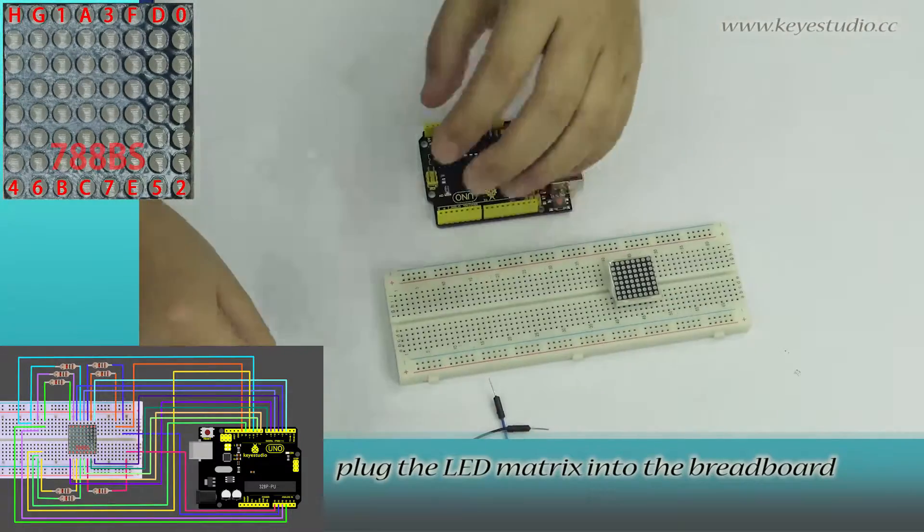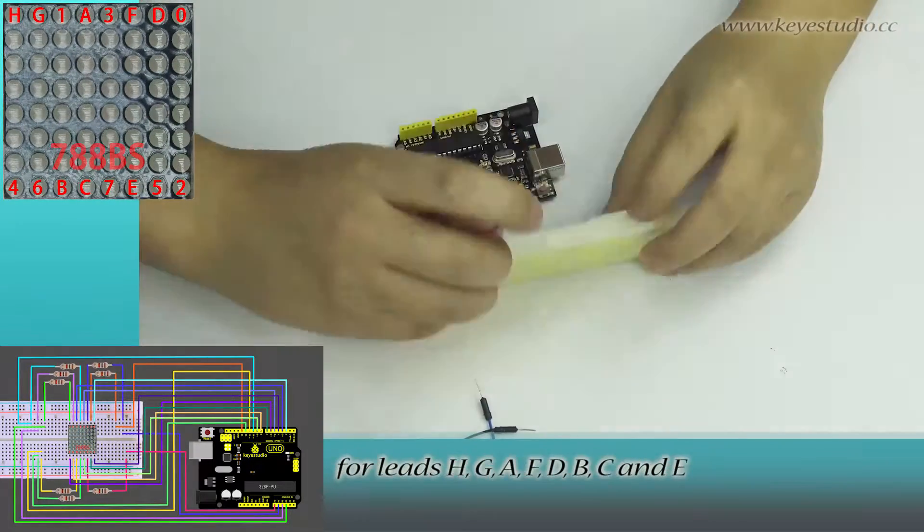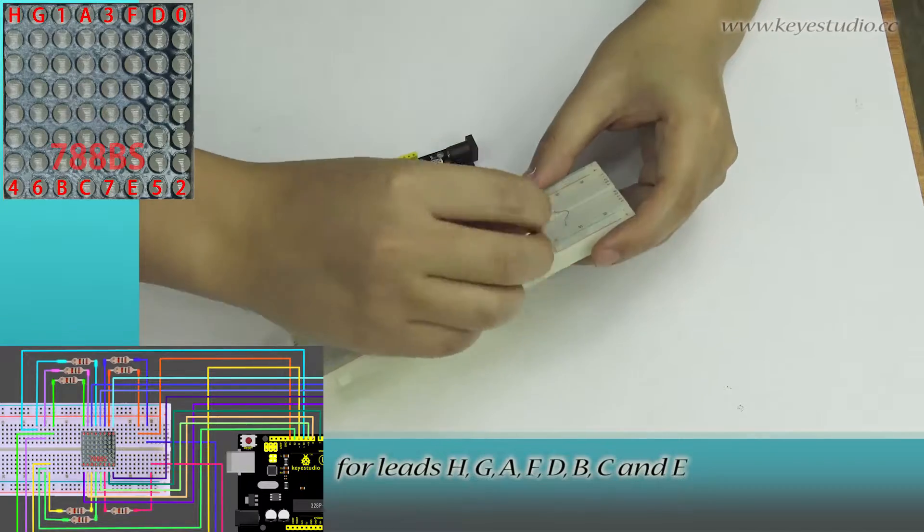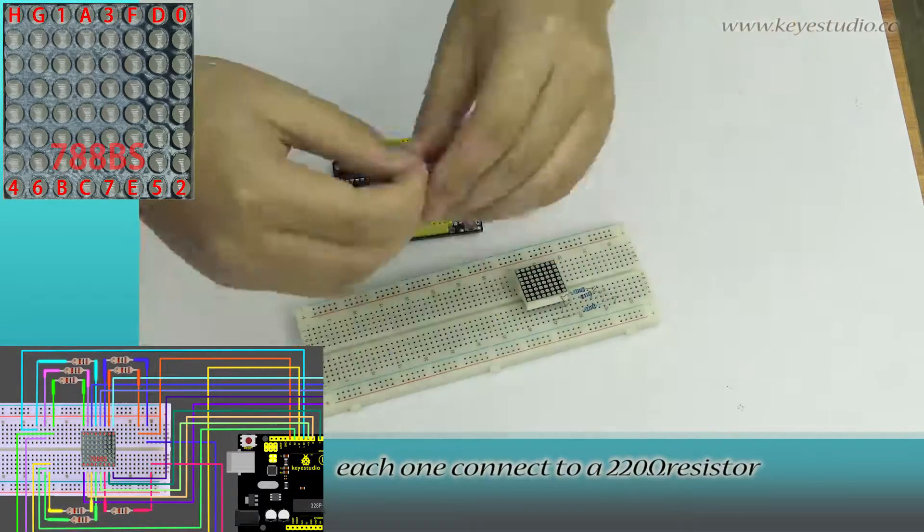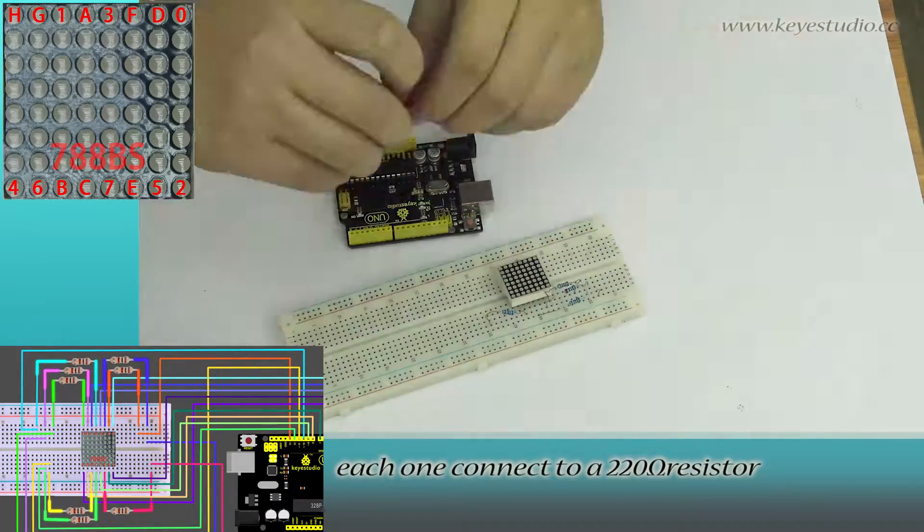Plug the LED matrix into the breadboard. For leads H, G, A, F, D, B, C, and E, each wire connects to a 220 ohm resistor.